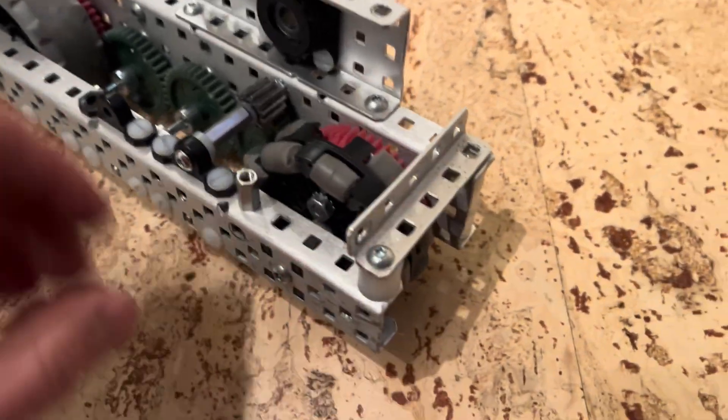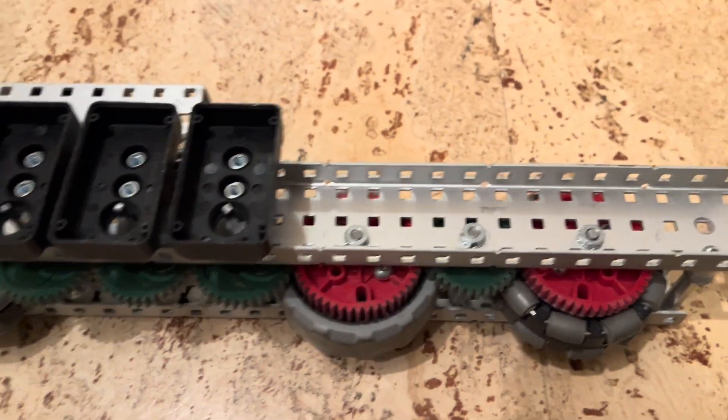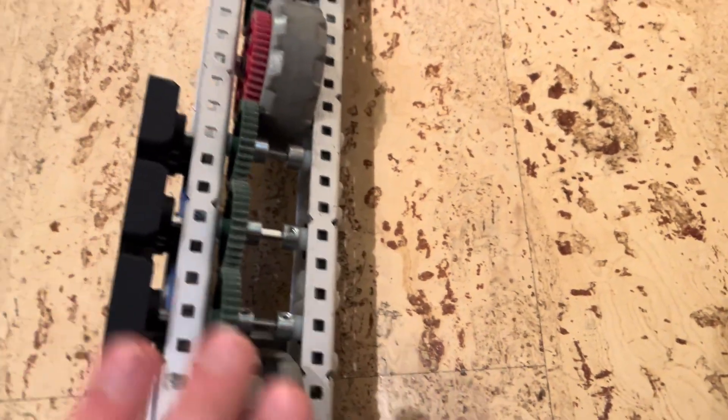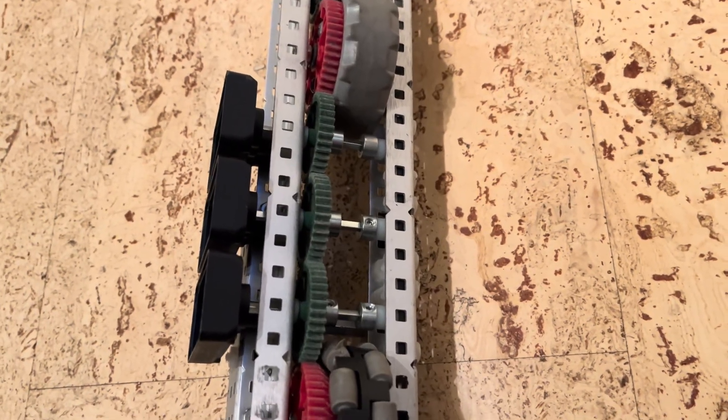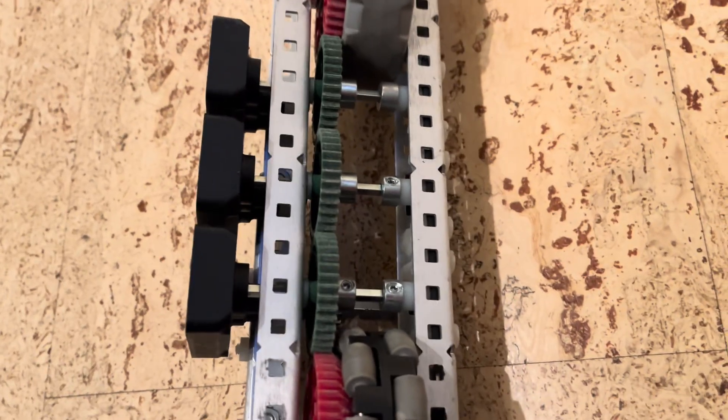And then also when we were building the chassis something you can do is take say a five wide plate and put it across the chassis as you're putting in your screw joints. That means you can get a very consistent distance across your chassis which helps keep everything very very square.